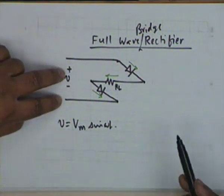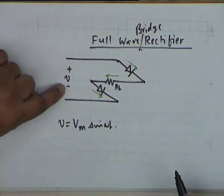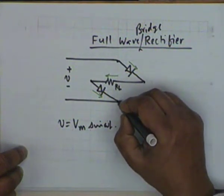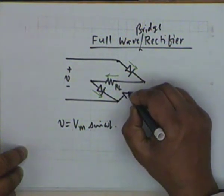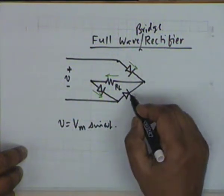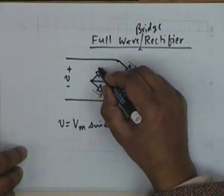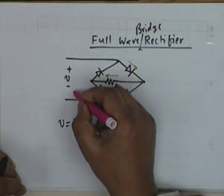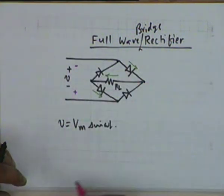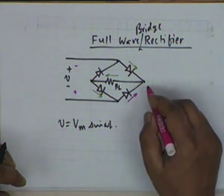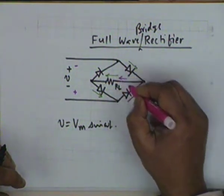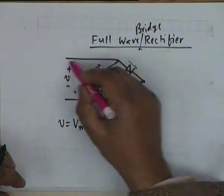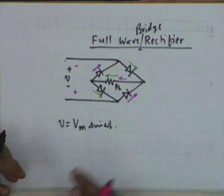When the voltage polarity reverses — the lower end becomes positive with respect to the upper end — current flows through another diode, then through the load in the same direction as in the previous case, then through another diode, and finally back to the source. In both half cycles the current flows through RL in the same direction.